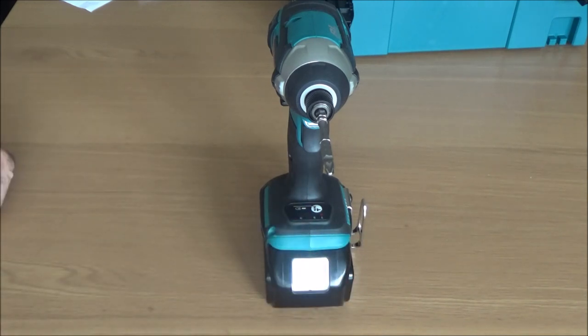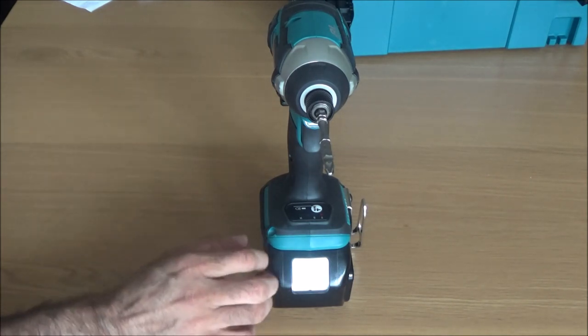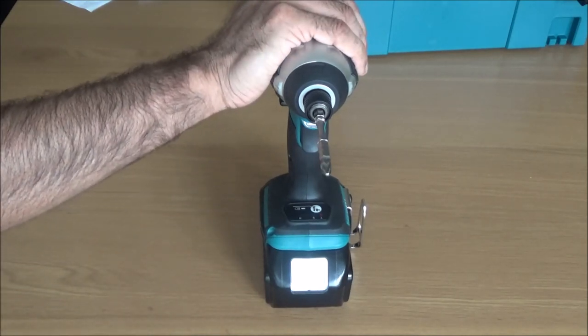The slow produces 1,100 IPM, the medium 2,600 IPM, and the high 3,800 IPM.